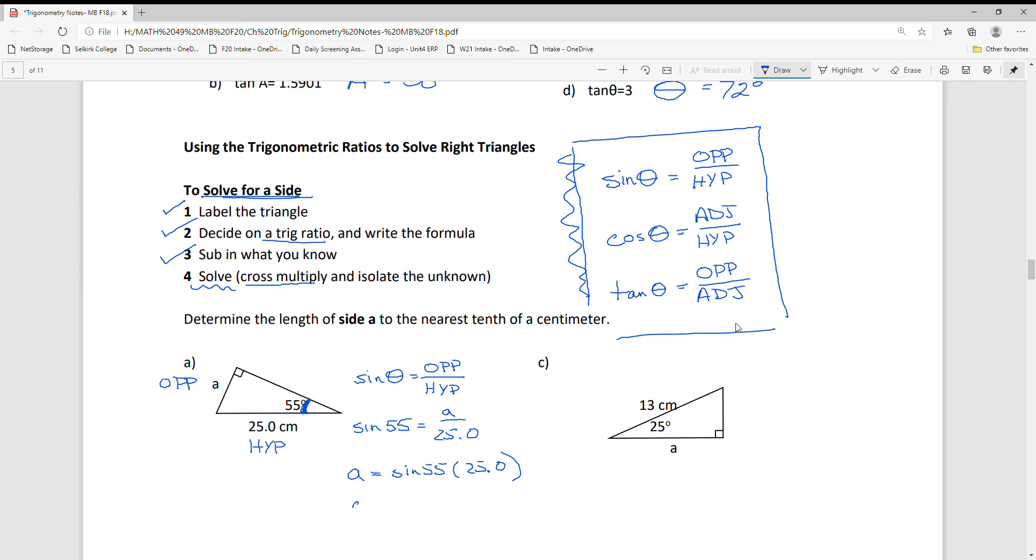This next step is done in my calculator. My calculator is programmed with the decimal equivalent of sine 55. Make sure your calculator is working. That should be the length of side A.